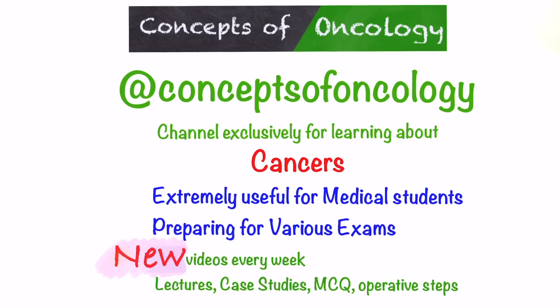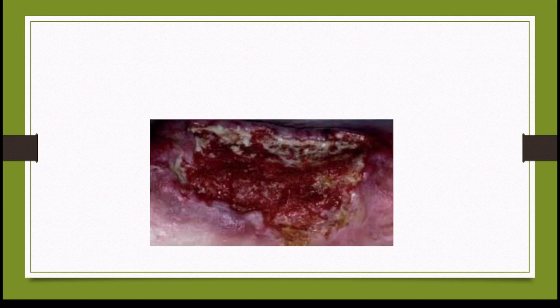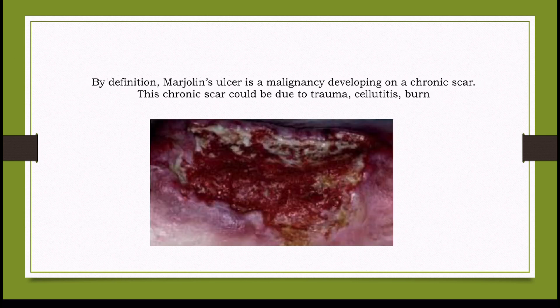Welcome to Concepts of Oncology, a channel exclusively for learning about cancers. What is Marjolin's ulcer? Marjolin's ulcer is a malignancy developing on a chronic scar. This chronic scar could be due to trauma, cellulitis, or burn.